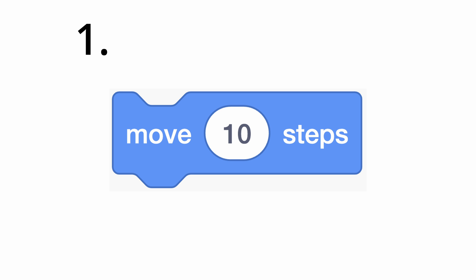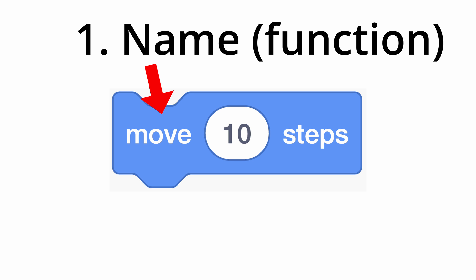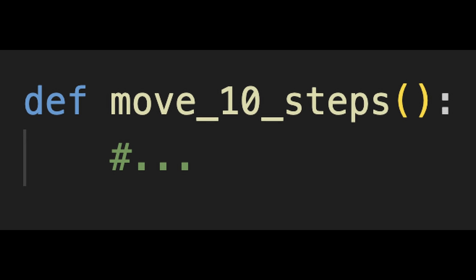The first component, which every block has, is the name of the block, which tells you what the block does. This is the block's function, which conveniently translates to a function in real world coding.